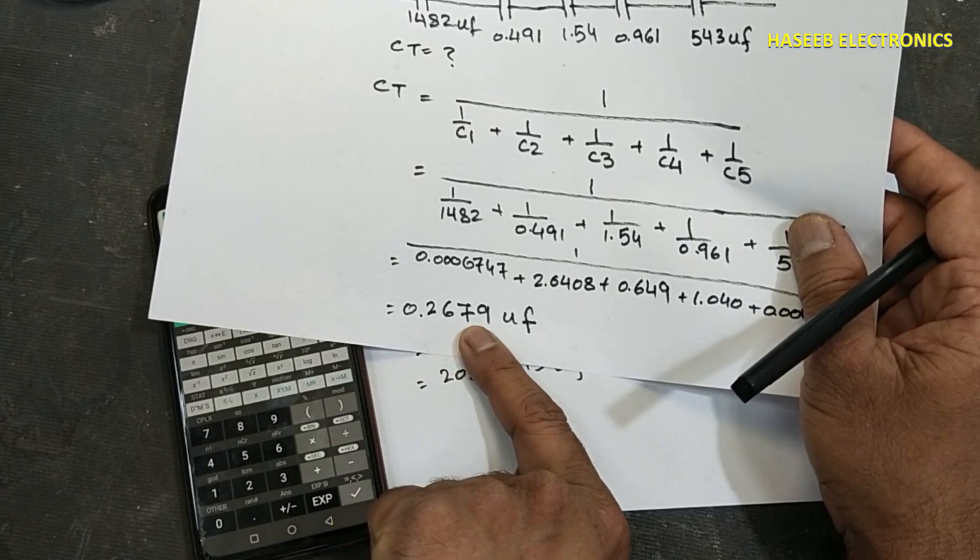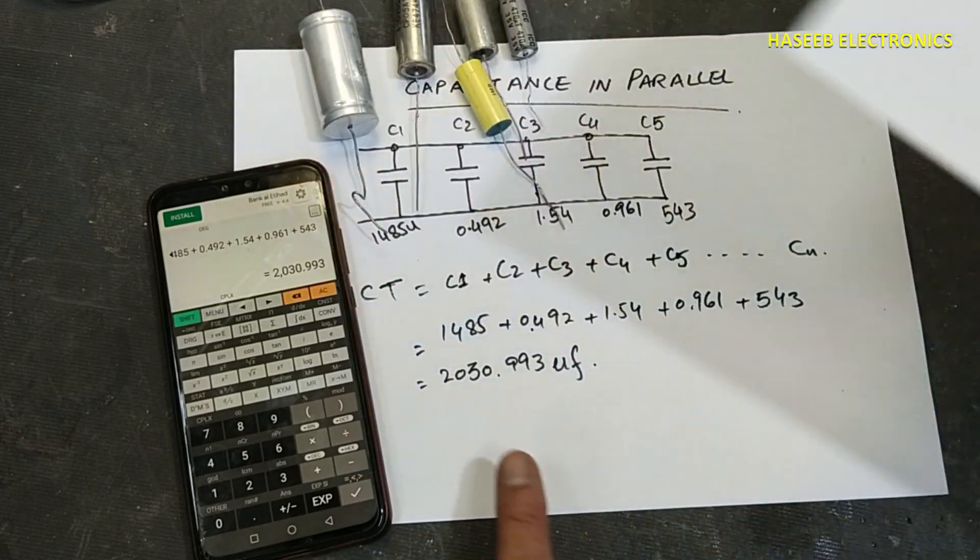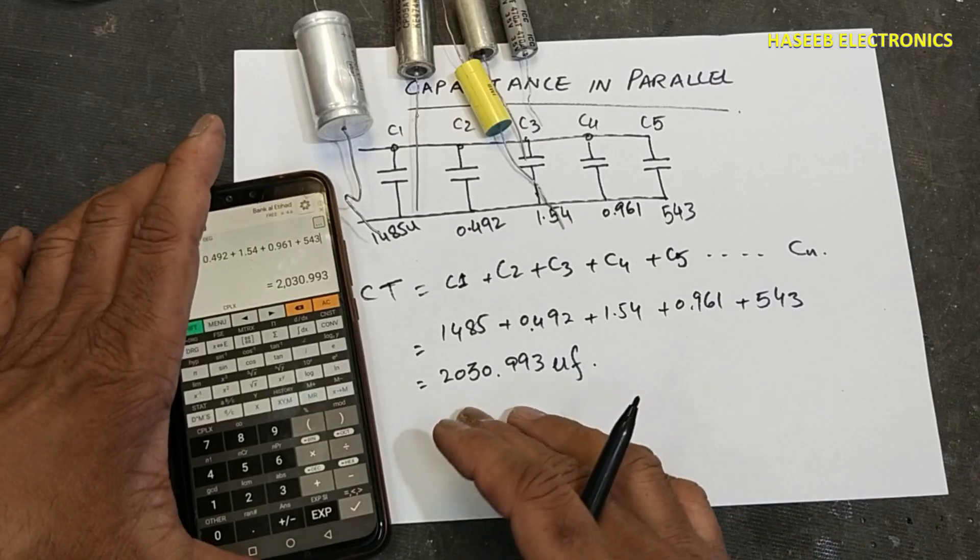In series the capacitor value was 0.2679, less than the smallest capacitor. But here it will be more than the largest capacitor in parallel.